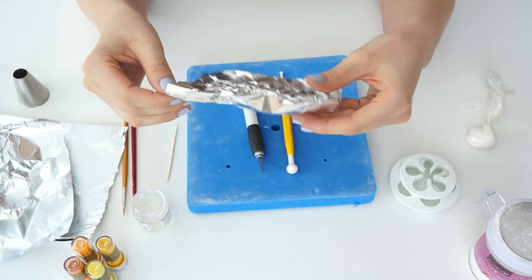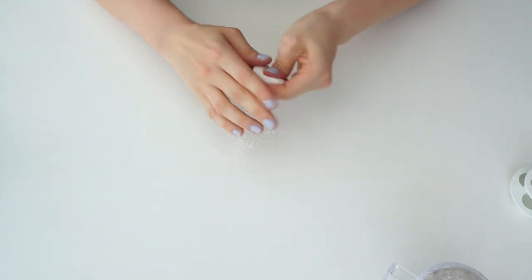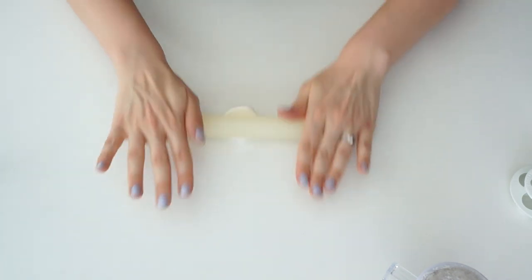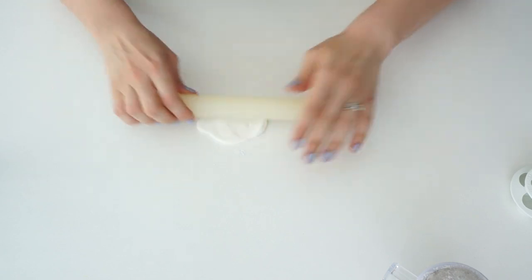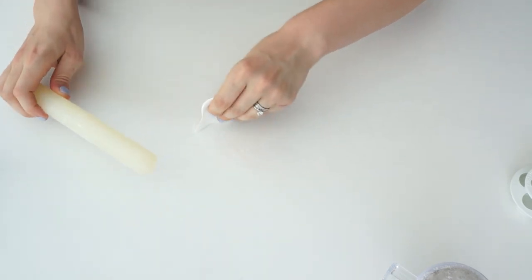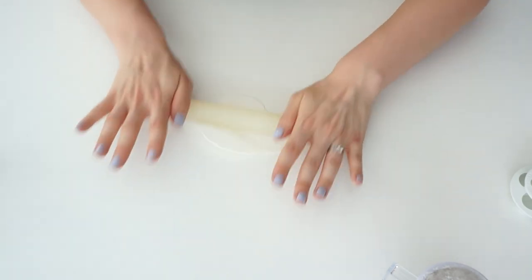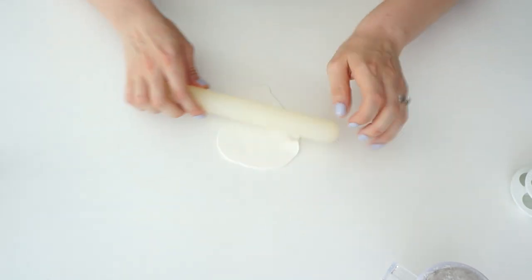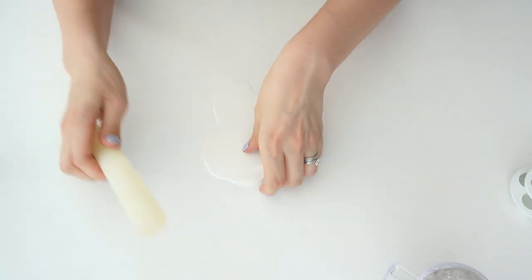First of all, I'm just going to roll out the gum paste, making sure that there's corn flour on there so that it doesn't stick. You want this fairly thin but not so thin that you can see through it - just under a millimeter in thickness.